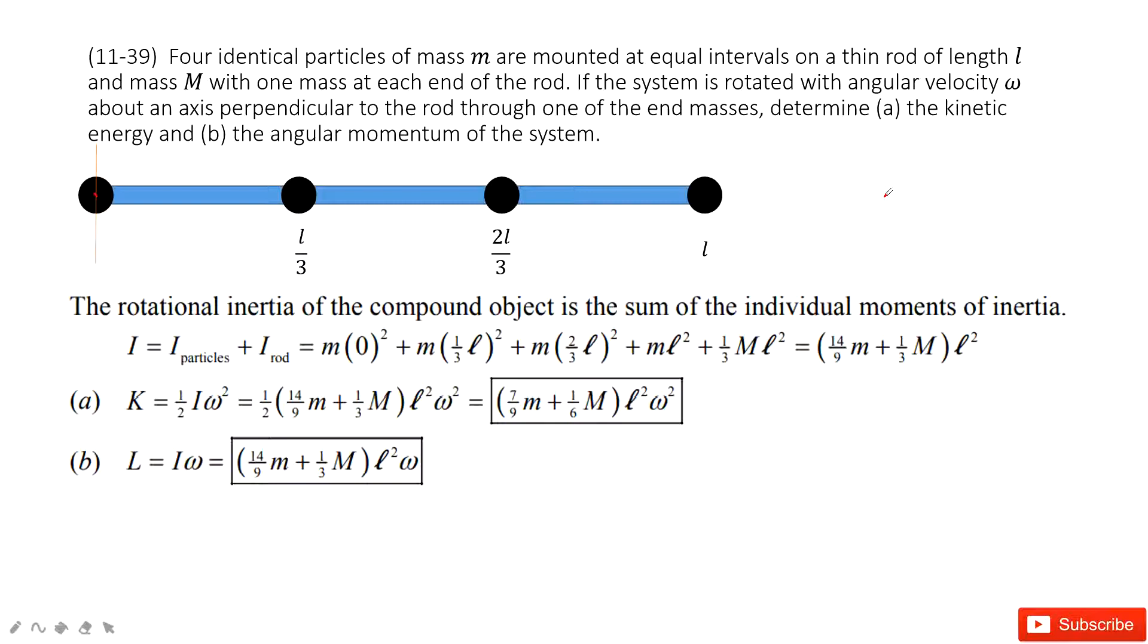We can consider for the kinetic energy, it's one half I omega squared. The angular momentum is I omega. Omega is given, so we need to find I for this system. Now we choose this point as a rotating axis. So the I should include two parts from the particle and from the rod.